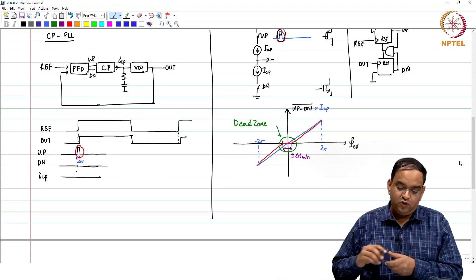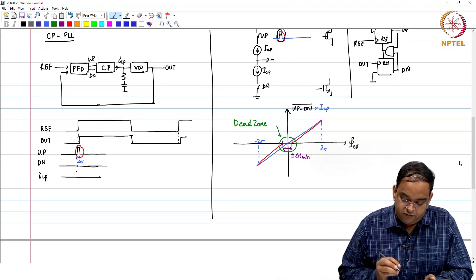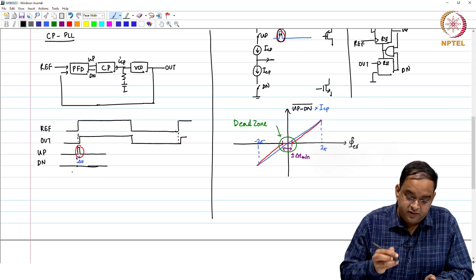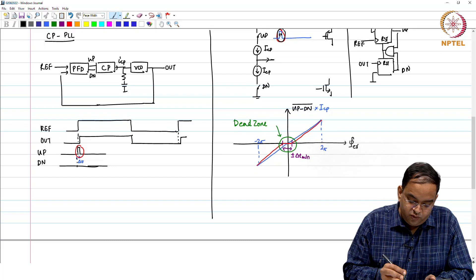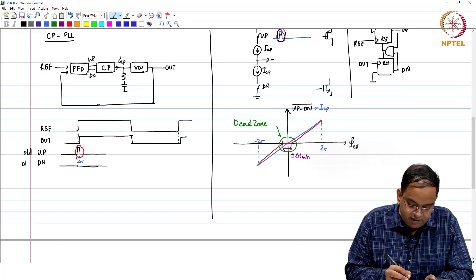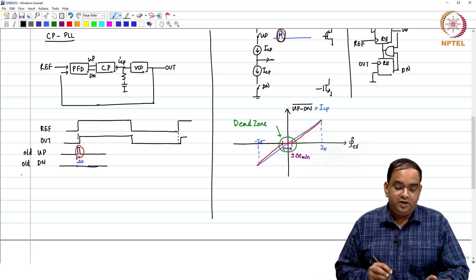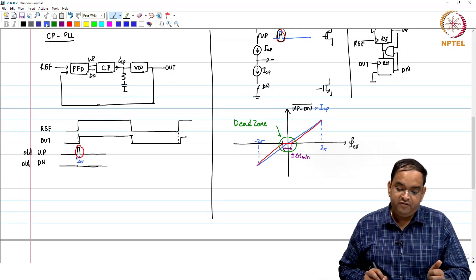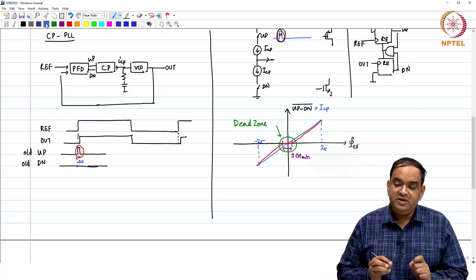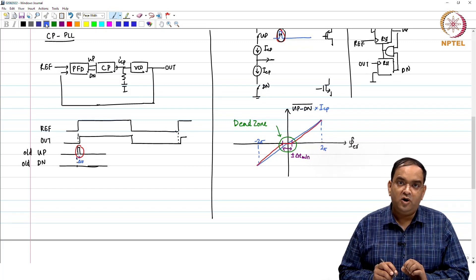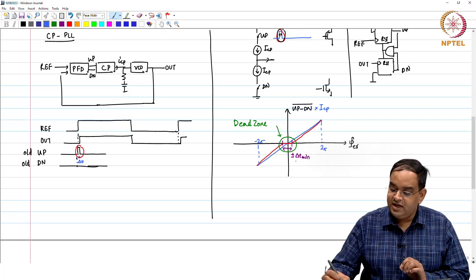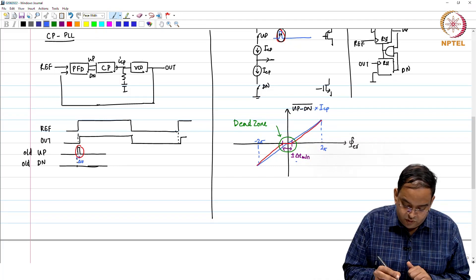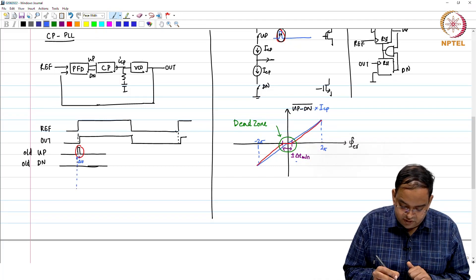To overcome this dead zone problem, what we do is the following. This is old up and down signals. In the improved PFD or the PFD with removal of dead zone, we make our pulse on for at least t_min time which is required to turn on our switches.